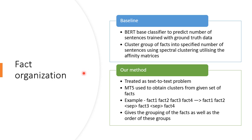Next, we move on to fact organization. The intuition behind this method is that facts often occur together. For instance, date of birth and date of death are two facts which occur together in many Wikipedia articles. Explicating this organization can help the model generate higher quality examples. For a baseline approach, we used a BERT-based classifier to predict the number of sentences, trained with ground truth data. Then, clusters of facts are obtained using spectral clustering, with the number of clusters equal to the number of sentences predicted by the classifier. For an end-to-end approach, this problem was treated as a text-to-text problem, and an mT5 model was used to obtain the cluster from a given set of facts, as can be seen in the example here. This step not only gives the grouping of the facts but also the order of these groups.